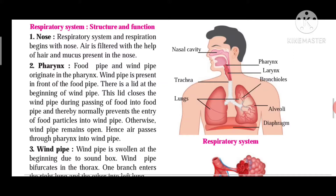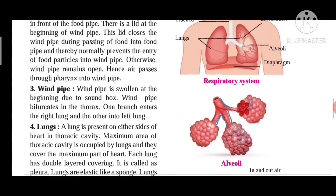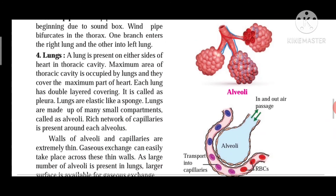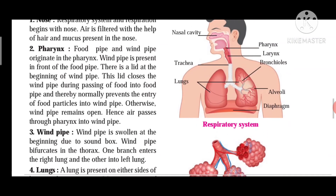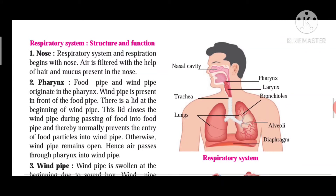The respiratory system is composed of the nose, pharynx, windpipe (trachea), lungs, and alveoli. These are the parts of the respiratory system. The nose is the beginning of the respiratory system. Inside the nose there are tiny hairs, cilia, and mucus. The function of the nose is to inhale air in and exhale it out. The air is filtered here because of the hair present in the nose, and dust particles are trapped in the mucus. The air is made warm due to the elongated path.